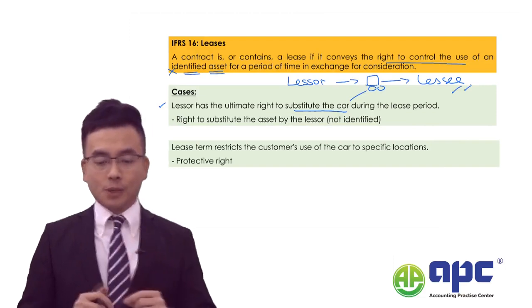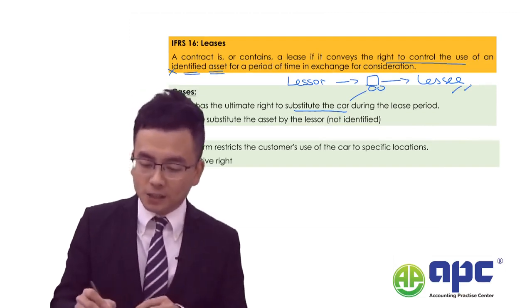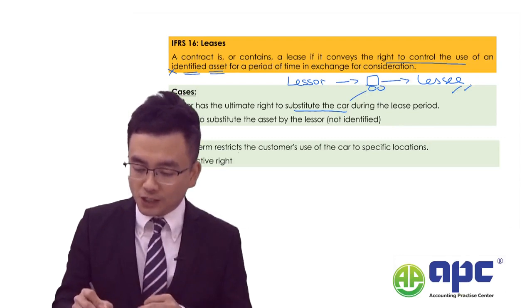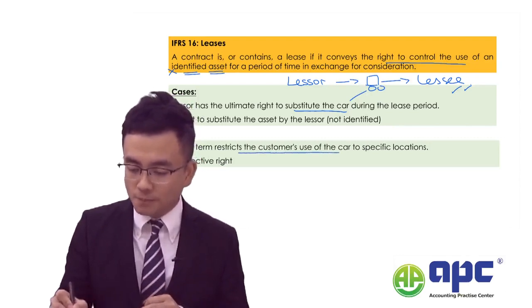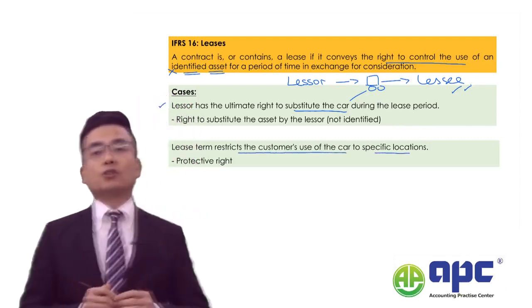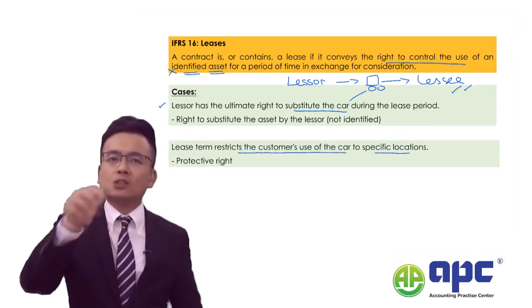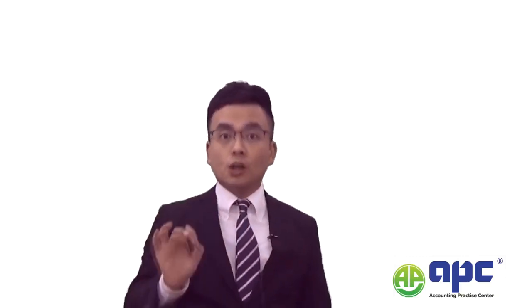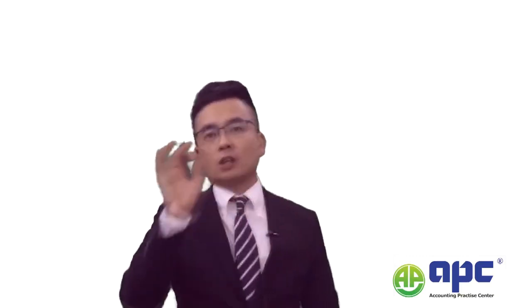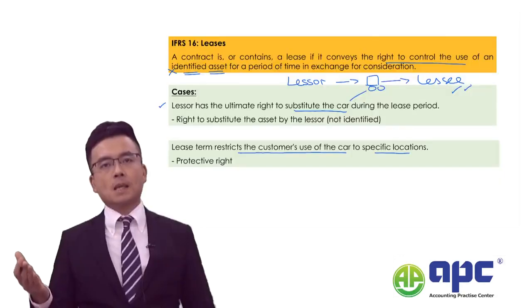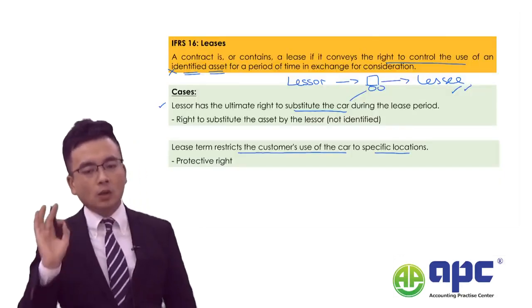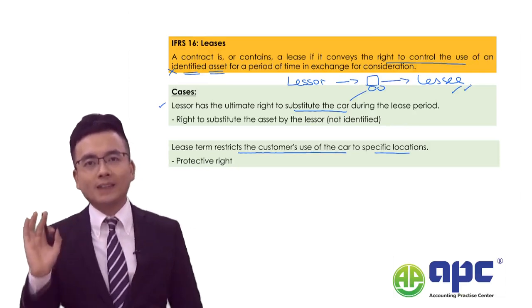However, another example here is that if, in a lease term, the lessor restricts the customer's use of the car to specific locations — which means when we sign the lease contract according to the terms and conditions, the lessor says you can't drive this car on this road, or you can't drive this car from 7 a.m. to 8 a.m. — is the asset still identified?